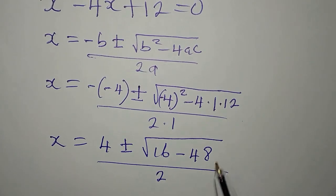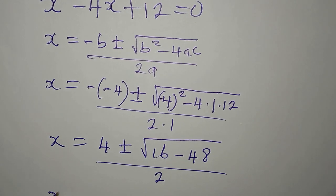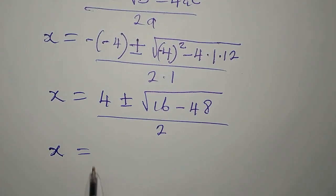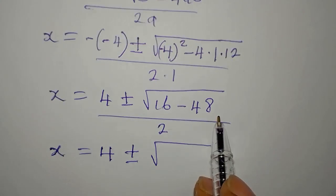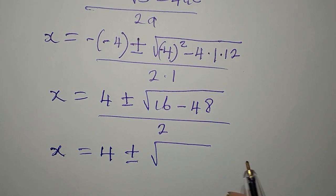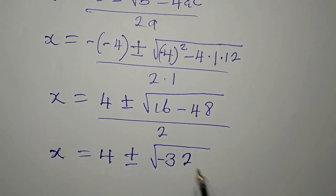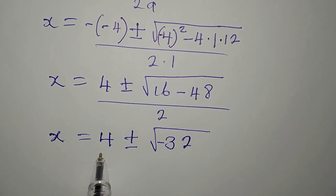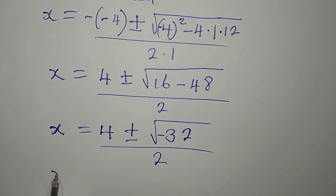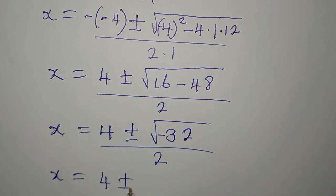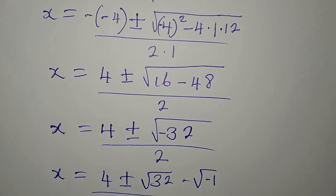4 times 1 times 12 is 48, and negative 4 squared is 16. So x equals 4 plus or minus square root of 16 minus 48, divided by 2. That is 4 plus or minus square root of negative 32, all over 2. We can write this as 4 plus or minus square root of 16 times 2 times square root of negative 1, all over 2. Since the square root of 16 is 4 and square root of negative 1 is i, we have 4 plus or minus 4i root 2, divided by 2.